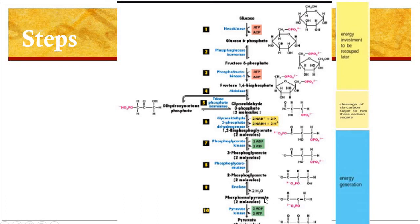In step number 9, in the presence of enolase, 2-phosphoglycerate is converted to phosphoenolpyruvate and 1 molecule of water is removed. This is a reversible reaction. In step number 10, in the presence of pyruvate kinase, phosphoenolpyruvate is dephosphorylated to form pyruvate and 1 mole of ATP is generated. This reaction is again a substrate-level phosphorylation and this step is irreversible in nature.